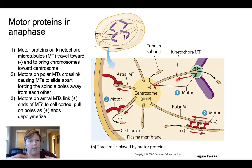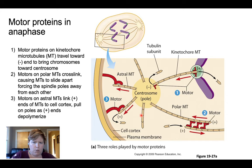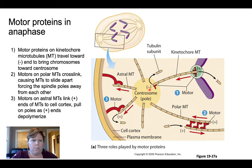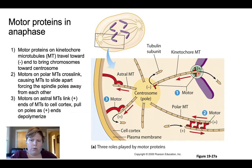This image breaks down the different motor proteins that are playing a role, zooming in on that centrosome or spindle pole where those microtubules grow out of. We have three different instances where motor proteins are playing a role. In the first, we have the process of pulling chromosomes toward the spindle pole — the positive end of the microtubule depolymerizes, losing tubulin molecules. At the same time, motor proteins interacting with the kinetochore and the microtubule are moving toward the minus end, pulling the chromosome to the opposite side of the cell.